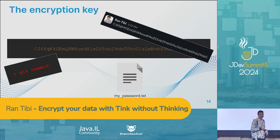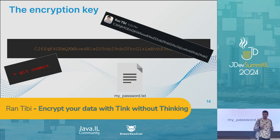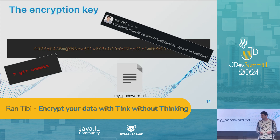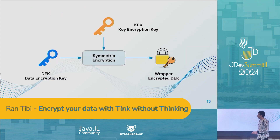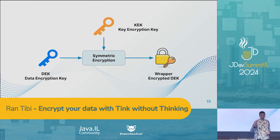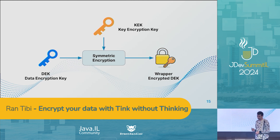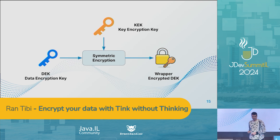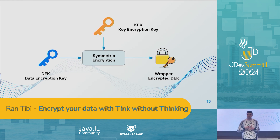So we discovered that a common practice to handle this issue is to encrypt the encryption key. Just as we use encryption to encrypt our sensitive data, we can use encryption to encrypt our key, which is also sensitive. We have the data encryption key, also called the DEK. We use another key — the key encryption key, the KEK — to encrypt the DEK. The result of this process is an encrypted DEK, also called the wrapper. The wrapper is gibberish — it's not sensitive. You can commit it to GitHub or send it over Slack, as it can only be decrypted using the KEK.